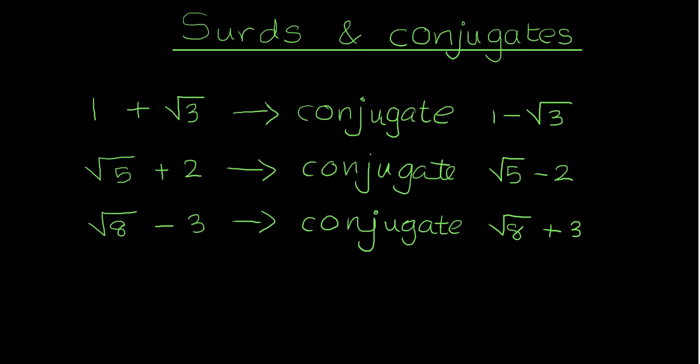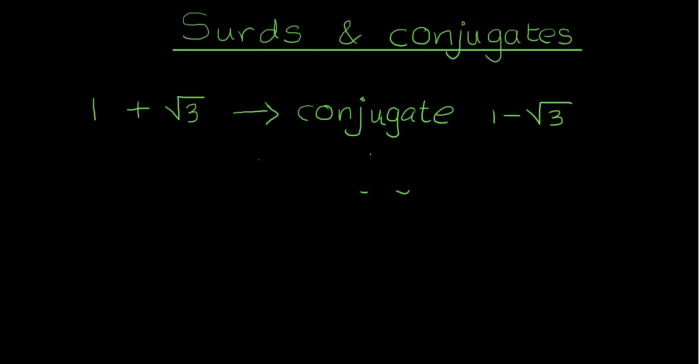What we are going to do is use conjugates to simplify some surds. So I will need to erase this in order to demonstrate an example. Here we go. That's one line, second line, and third line. Let's start off with a slightly simple example, although it may not seem so simple.